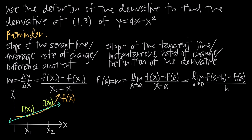That's the difference quotient and it's the slope of the secant line, because the secant line intersects the curve at two points. We can also say it's the average rate of change of the function over the interval x sub 1 to x sub 2. As the distance between x sub 1 and x sub 2 decreases — as we move x sub 2 closer and closer to x sub 1 — these points get closer and closer to one another.